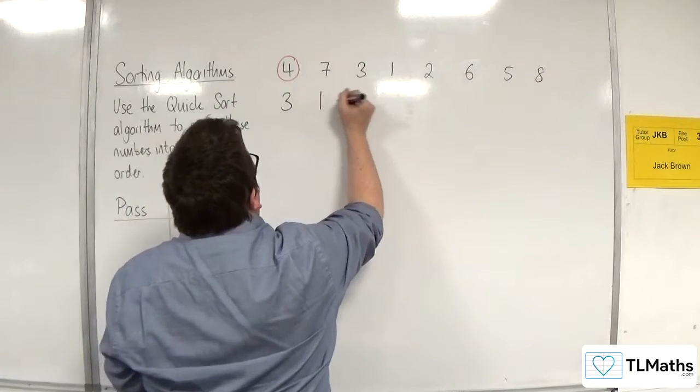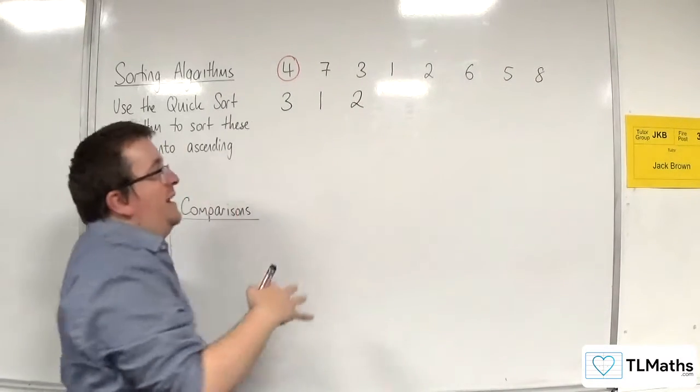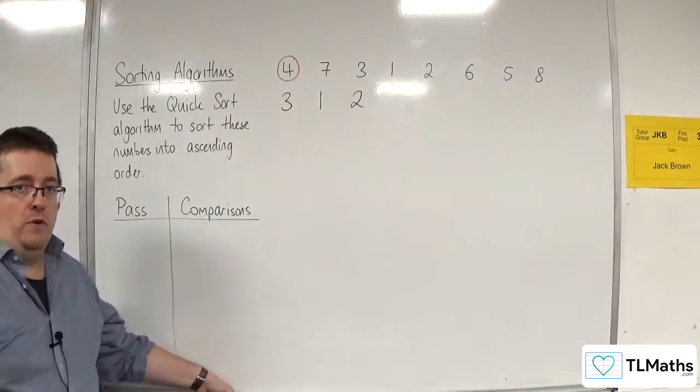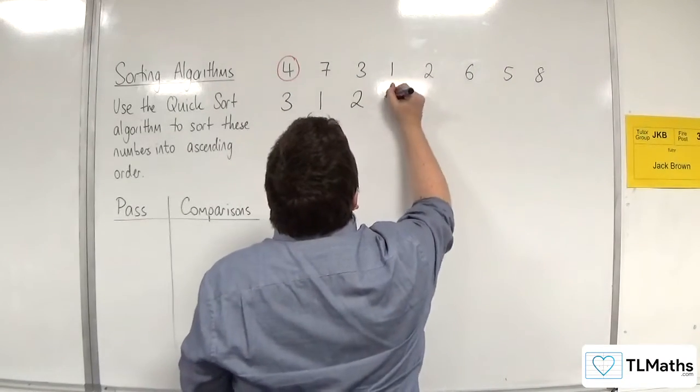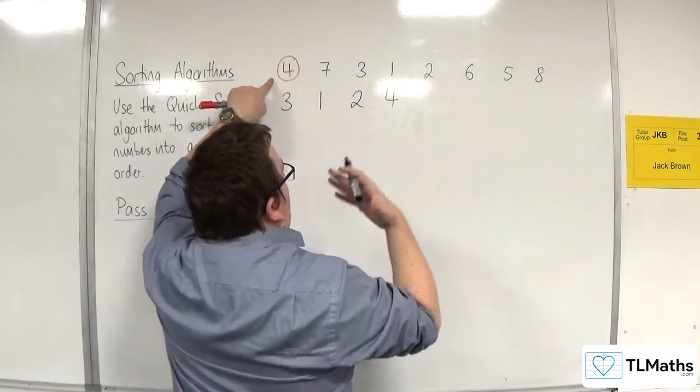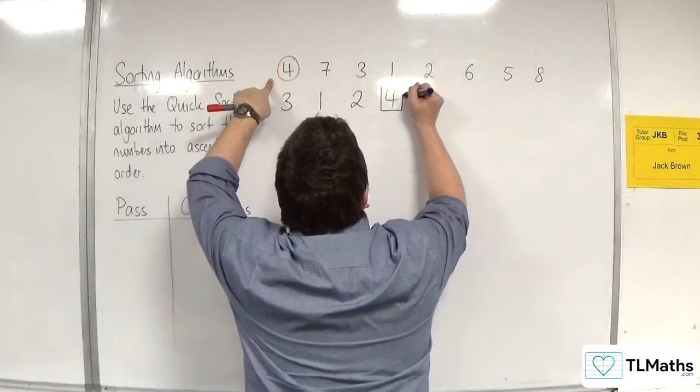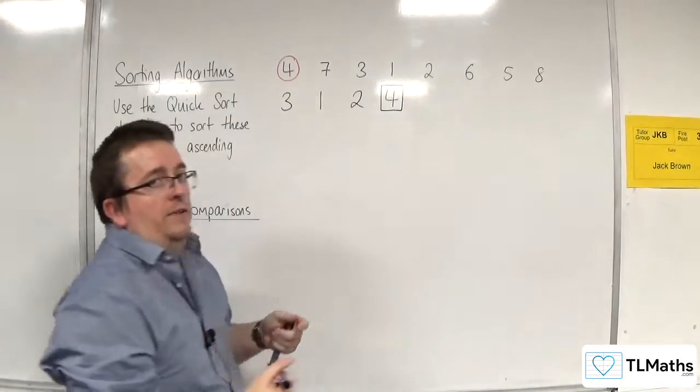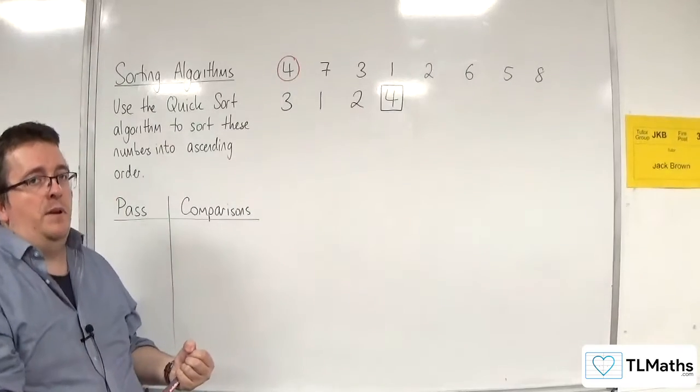But they must go in that same order, three, one, two. Do not accidentally reorder them as one, two, three. So three, one, two, and then we'll have the four. Now, because the four has now been used as a pivot, I now box it instead of putting a circle around it. The boxing identifies that I have used that as a pivot.